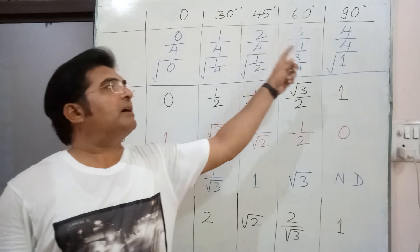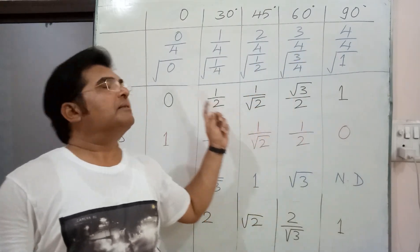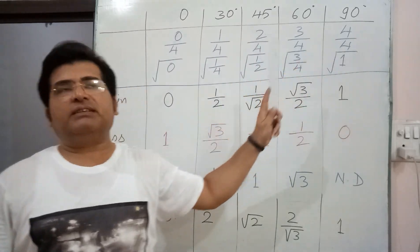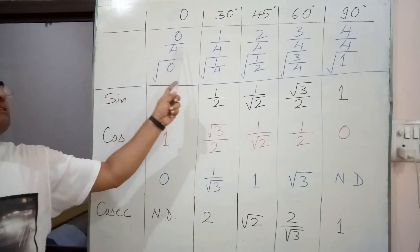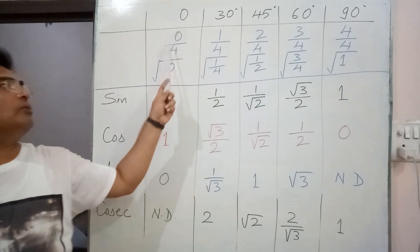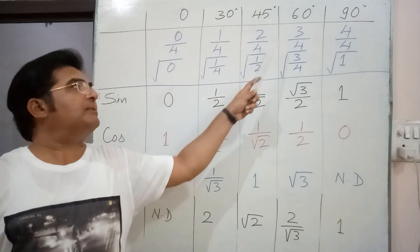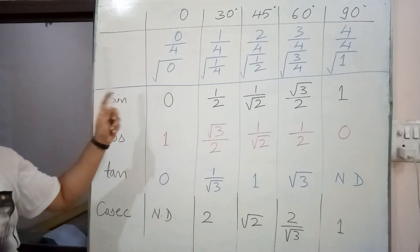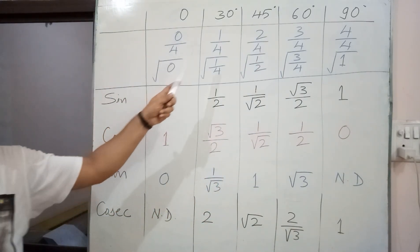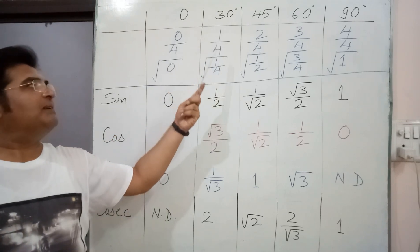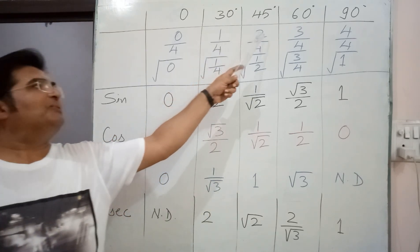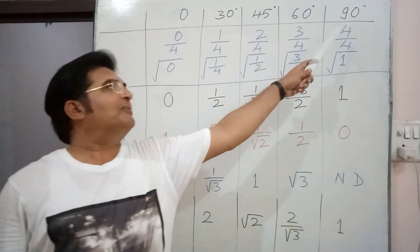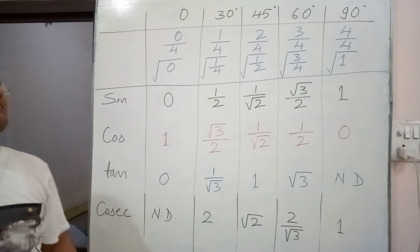For angles 0, 30, 45, 60, and 90, assign the values 0, 1, 2, 3, and 4. Then divide each by 4: 0/4, 1/4, 2/4, 3/4, and 4/4. Simplifying: 0/4 = 0, 1/4 stays as 1/4, 2/4 becomes 1/2, 3/4 stays as 3/4, and 4/4 becomes 1.